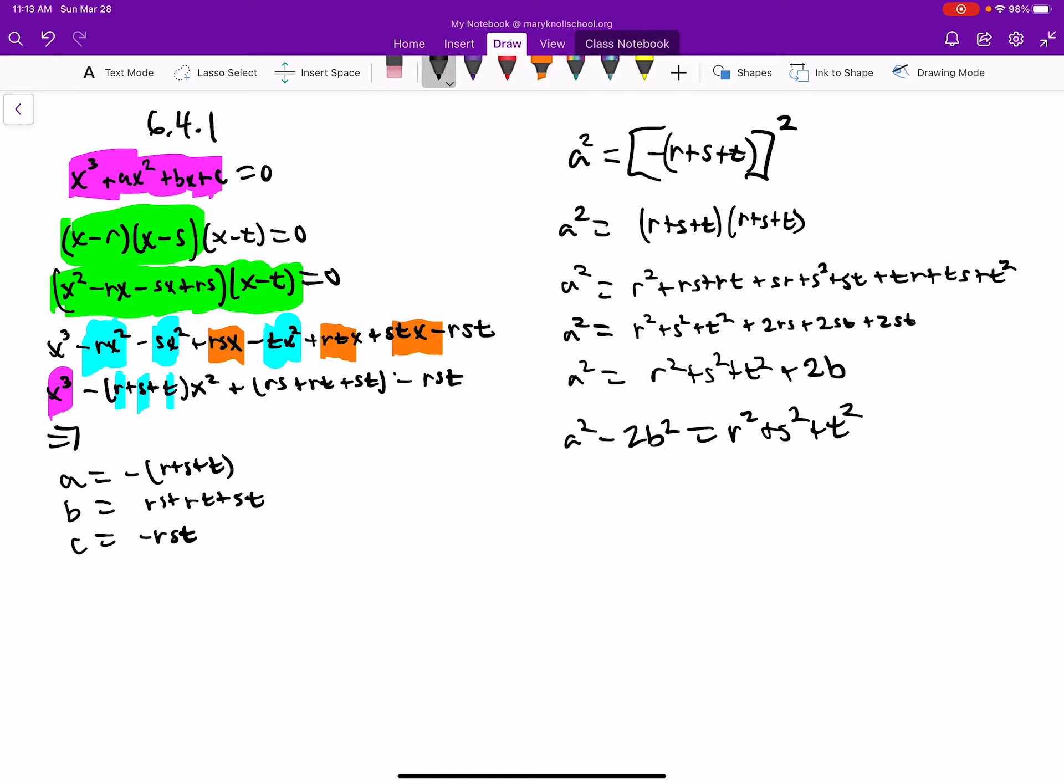Oh, and I forgot to put an x here. Group those together. And then finally, what we're left with is the negative r, s, t.